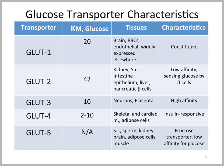We also have GLUT1, which is a low-capacity, high-affinity transporter, located in most cells of the body and is constitutively active.